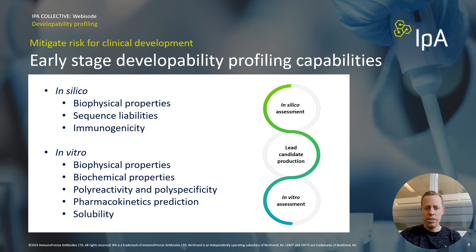IPA offers several in silico and in vitro analytical tools for developability profiling of a broad range of drug-like properties. The in silico analysis allows for very rapid characterization of large panels of antibodies, ranging from the evaluation of biophysical properties to predict aggregation-prone sequences, the identification of potential sequence liabilities, and immunogenicity prediction.